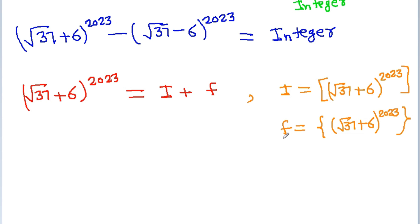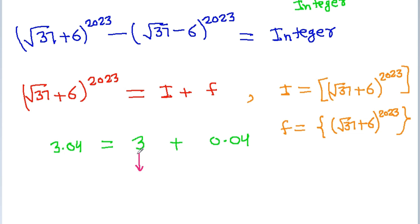If you don't know what integral and fractional parts are, here is an example. Suppose we have the number 3.04 — we can write this as integer part 3 plus fractional part 0.04. Here 3 is the integral part, called i, and 0.04 is the fractional part f. Note that f is always less than 1 and greater than or equal to 0.